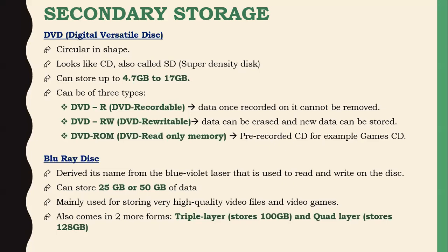Next are Blu-ray discs, which are circular in shape and come in different forms: single layer, dual layer, triple layer, and quad layer, depending on storage capacity. Blu-ray can store 25 GB to 50 GB of data. The technology used is blue-violet laser, which allows reading or writing on the disc and supports very high quality video files and video games. Triple layer Blu-ray stores up to 100 GB, and quad layer stores up to 128 GB. You must learn the storage capacity of each storage device.